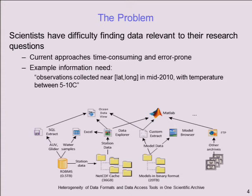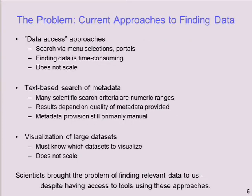An example query looks like: observations collected near a particular location in a particular time with some variable — in this case temperature — in some range between 5 and 10 centigrade. This is the way scientists describe data to each other. There are common approaches people have tried: menu selections and panels, which are great if you know exactly where the data is but don't scale; text-based search of metadata, which is great if somebody actually bothers annotating all the data, which nobody does.